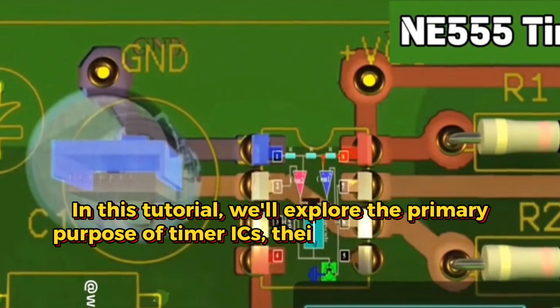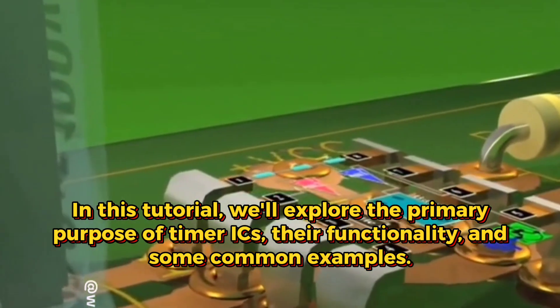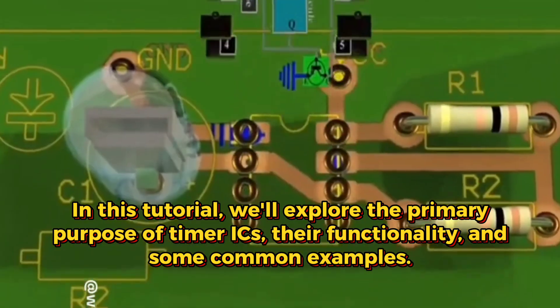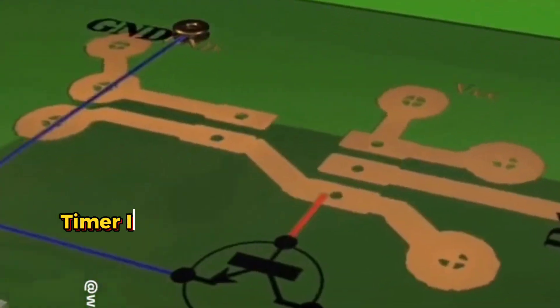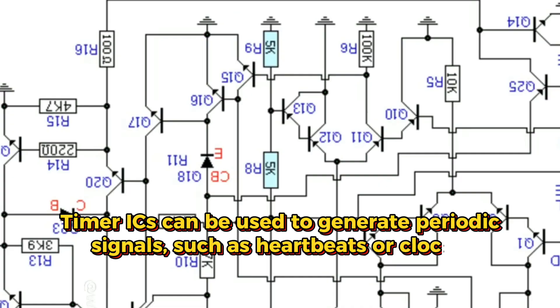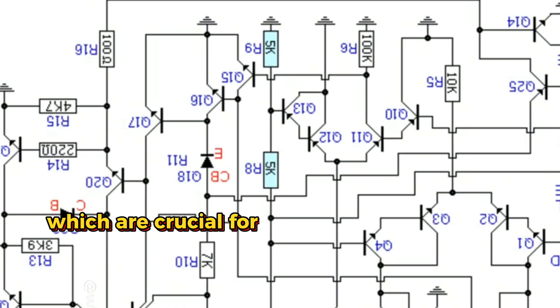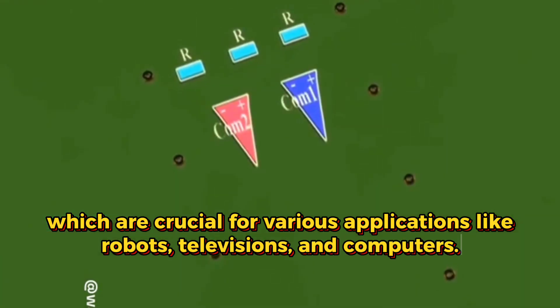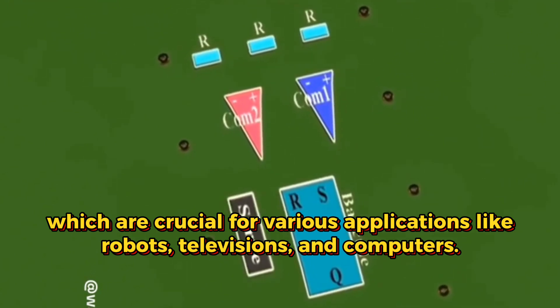In this tutorial, we'll explore the primary purpose of Timer ICs, their functionality, and some common examples. Timer ICs can be used to generate periodic signals such as heartbeats or clocks, which are crucial for various applications like robots, televisions, and computers.